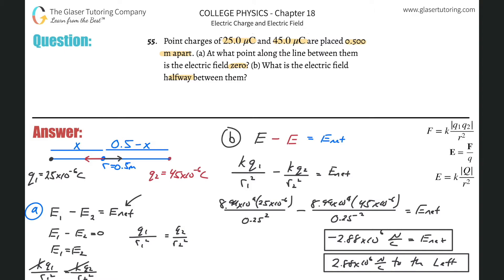Now plug in what we know. Q₁ is 25 × 10⁻⁶, divided by x squared, equals 45 × 10⁻⁶, divided by (0.5 − x) squared. This is going to work out to be a quadratic.